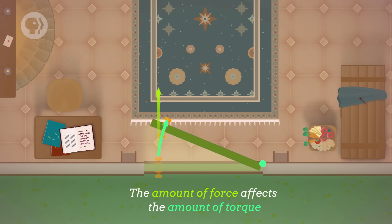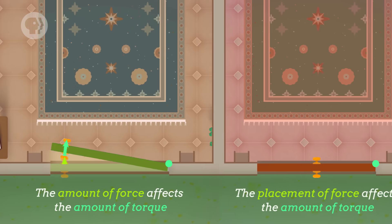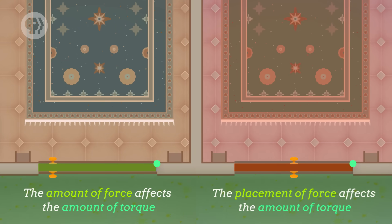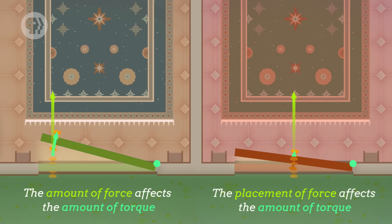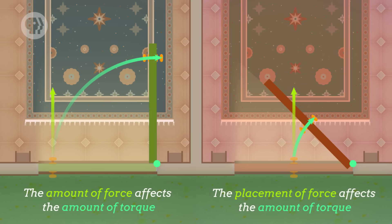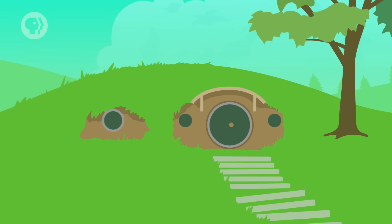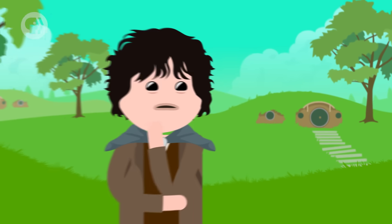The harder you pull on the handle, the more torque you will generate, and the more you'll change the door's angular velocity. More net torque means the door starts moving faster on its hinges. So the strength of the force applied is one factor that affects torque. Another is the distance between the force and the axis of rotation, or the radius — a larger radius means more torque. You know this if you've ever tried opening a door with a handle that's too close to the hinge, because there are reasons why doorknobs are generally placed far from the hinges.